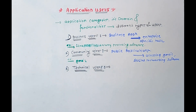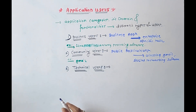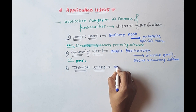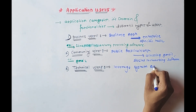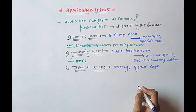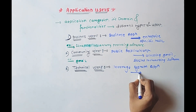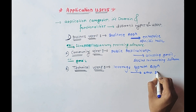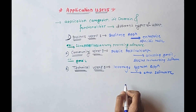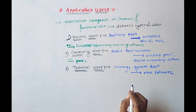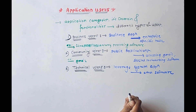The third type is the technical user. Technical users leverage system applications for developing other software. For example, a developer using operating system features would be considered a technical user.